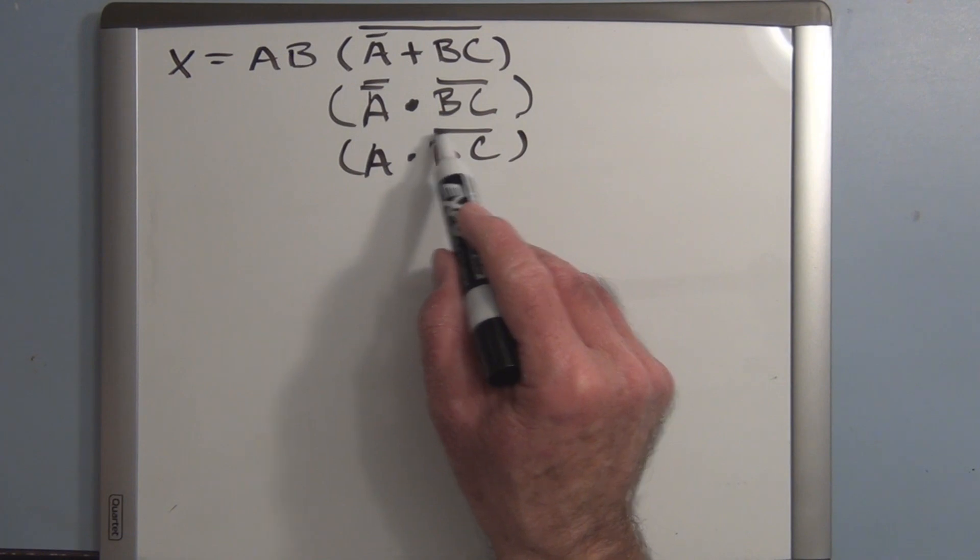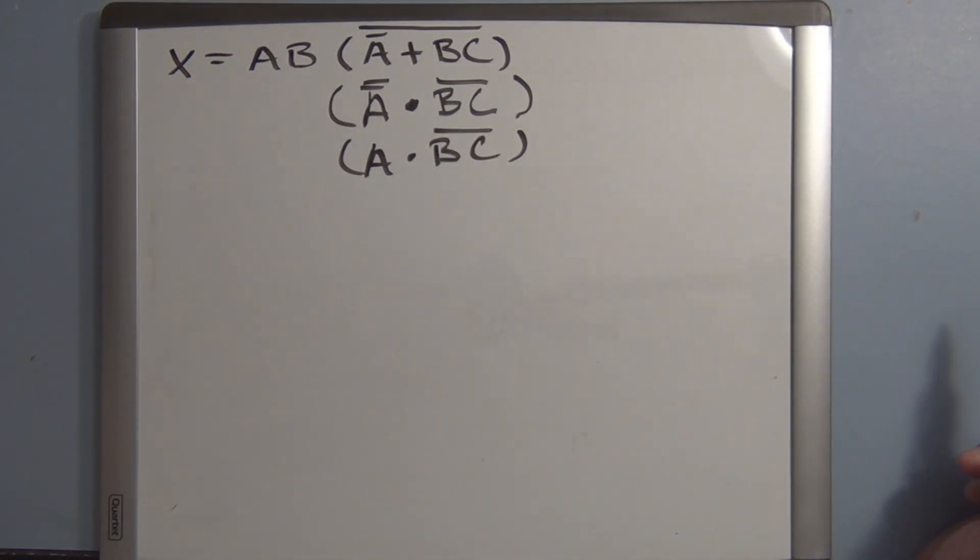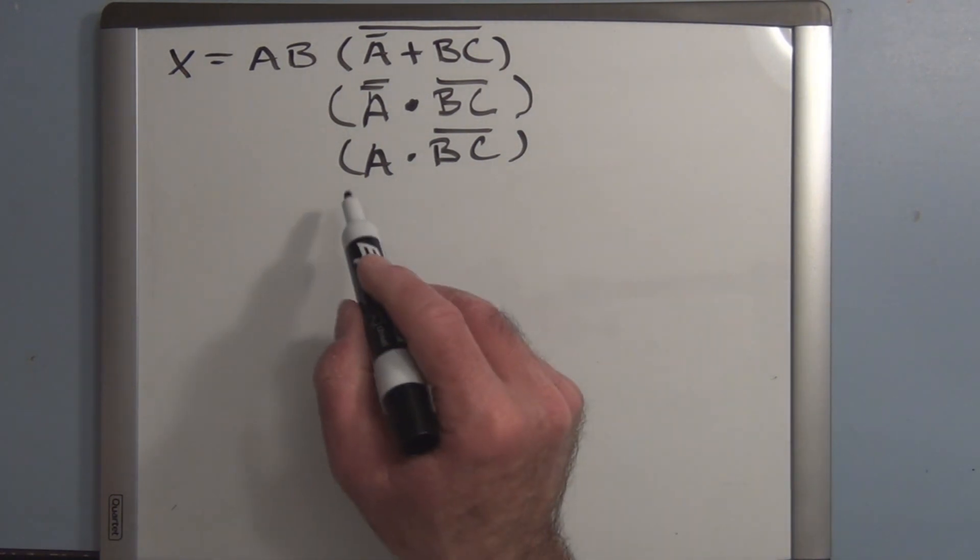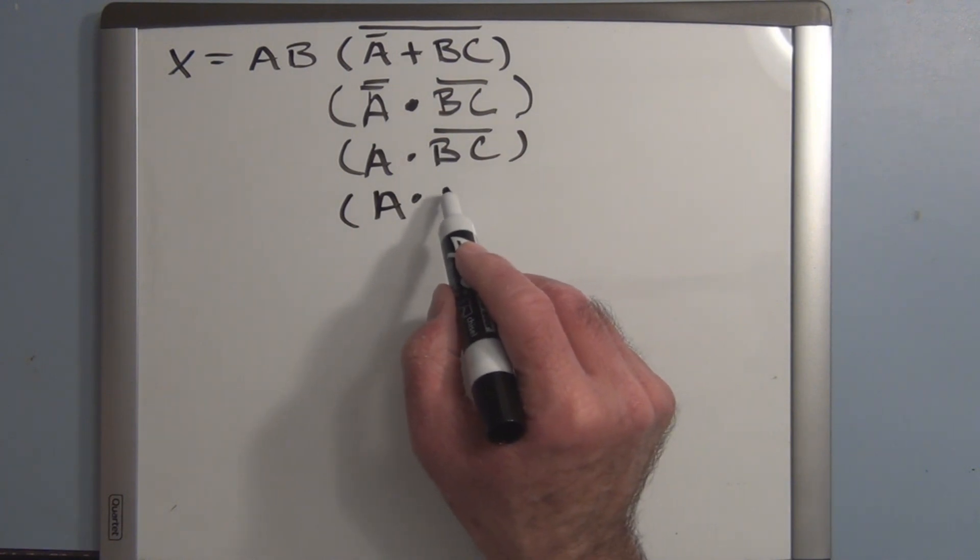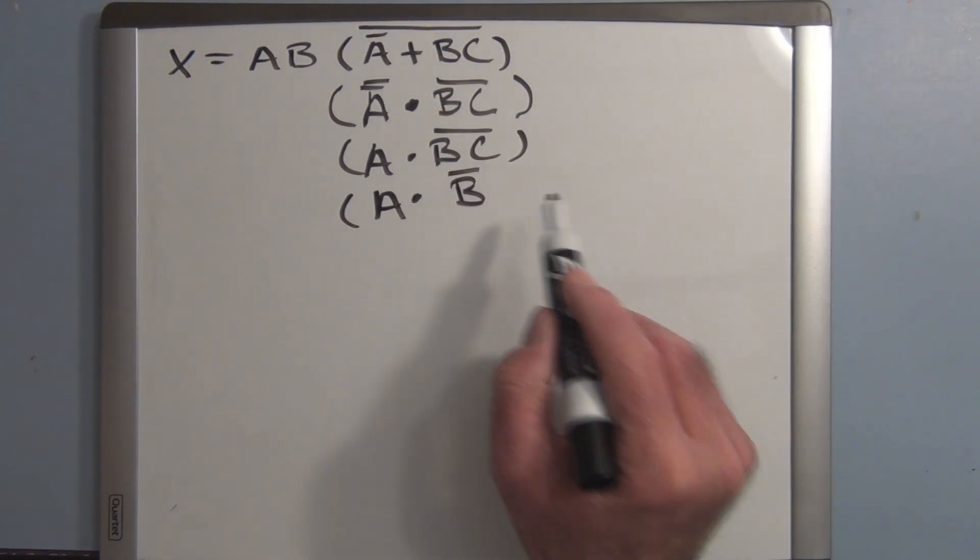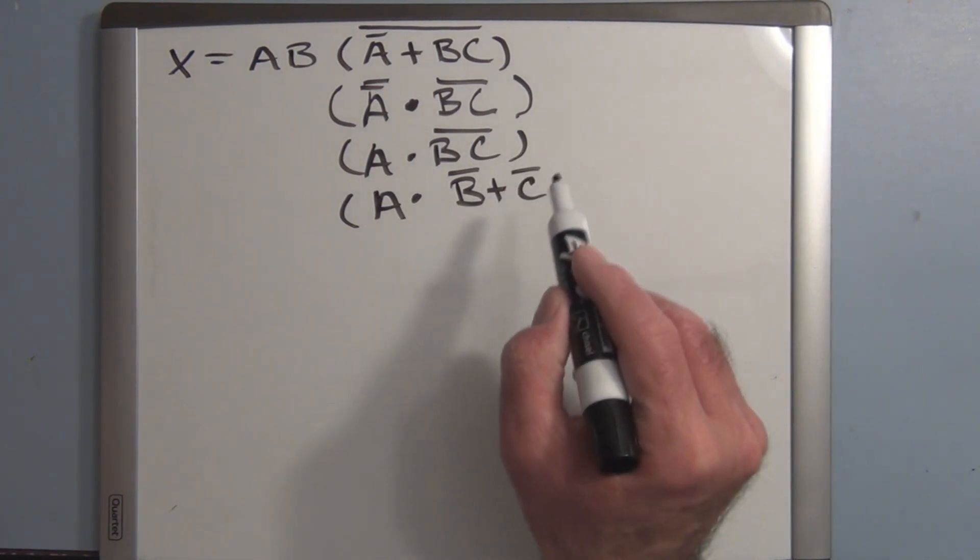So still concentrating on the inside here. Now we have an inverter over two elements, B and C. And using De Morgan's theorem again, we can break that up. So we have A and A and this becomes B inverted OR together with C inverted.